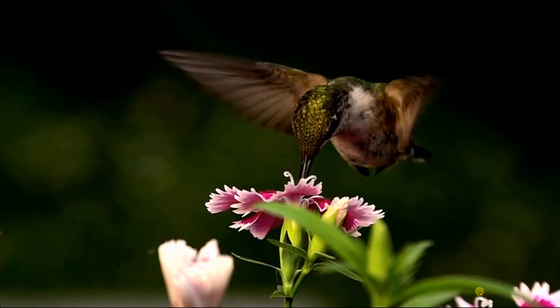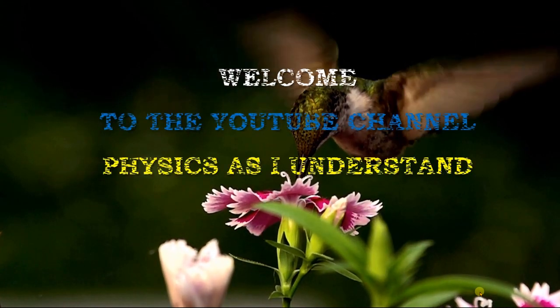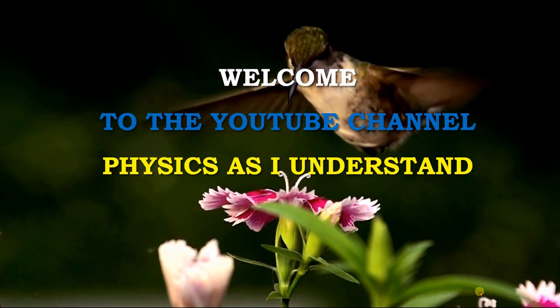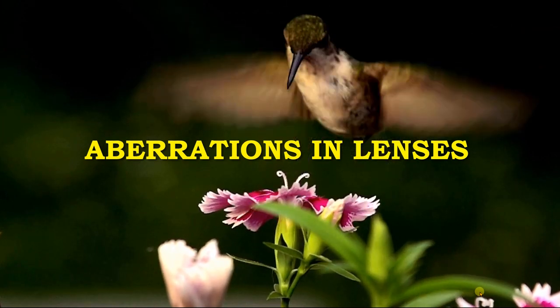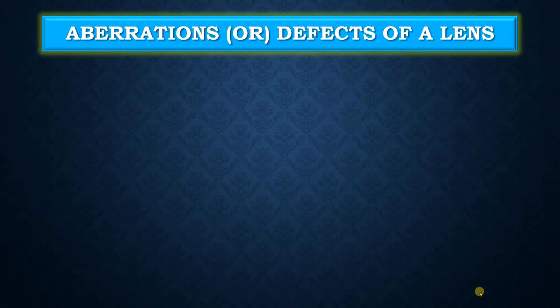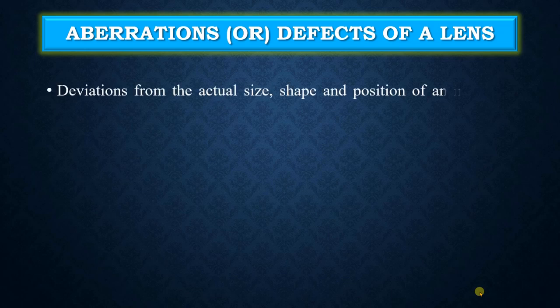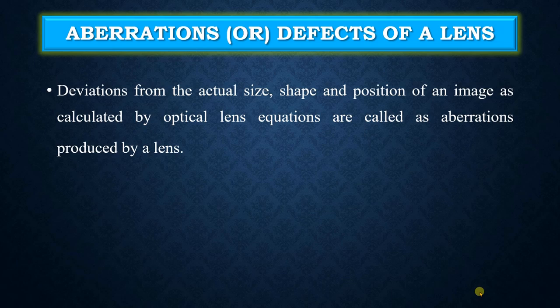Hello, welcome to the YouTube channel Physics as I Understand. In this video we are going to learn aberrations in lenses and different types of aberration. Aberrations means the deviations from the actual size, shape and position of an image as calculated by optical lens equations are known as aberrations produced by a lens.